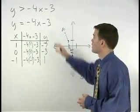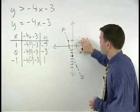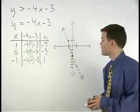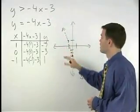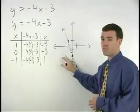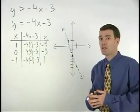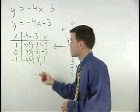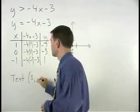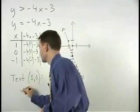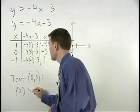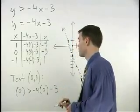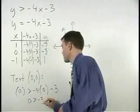The solutions to this inequality will all lie on either one side or the other of this boundary line. So to determine where the solutions lie, we choose a test point to plug back into the original inequality from either side of the boundary line. Usually, the easiest point to try is the origin, 0, 0. So plugging 0, 0 back into the original inequality, we have 0 is greater than negative 4 times 0 minus 3 or 0 is greater than negative 3.